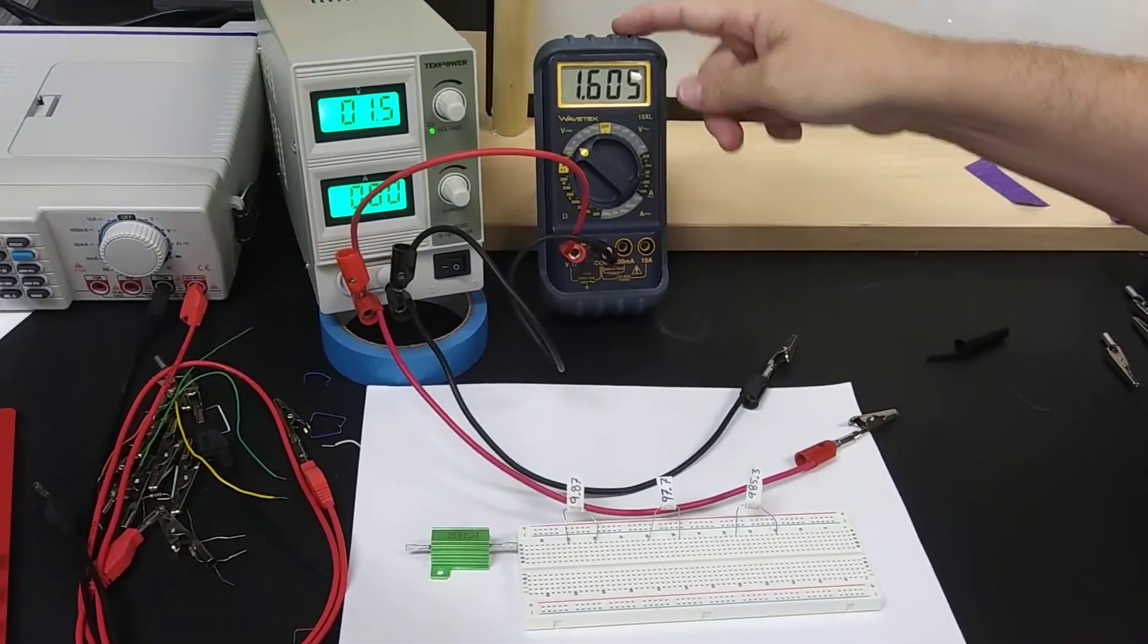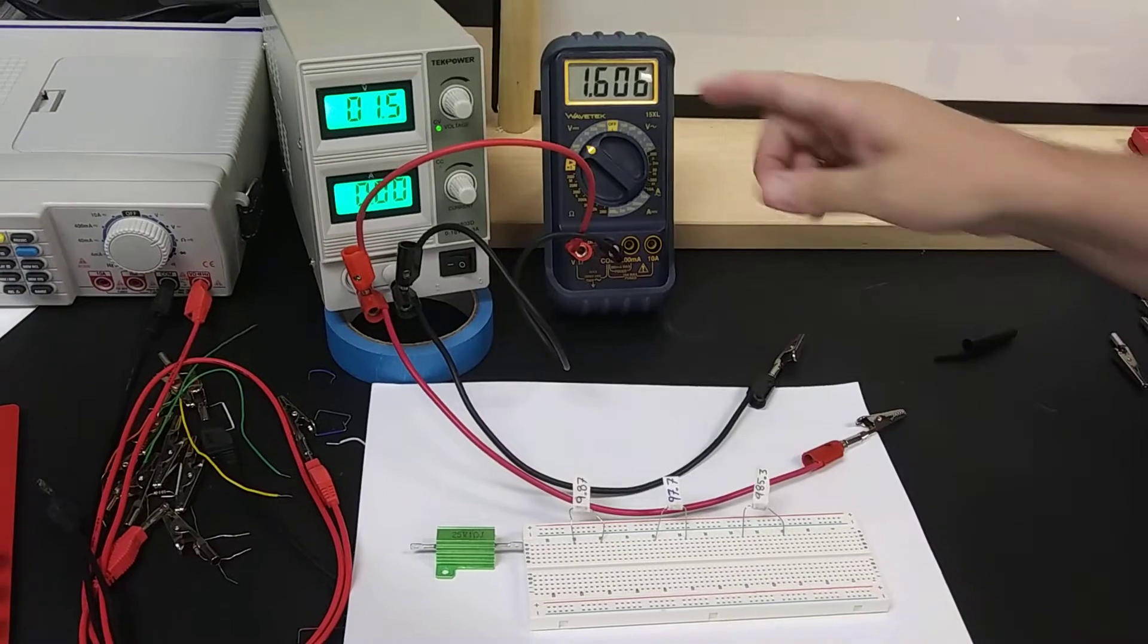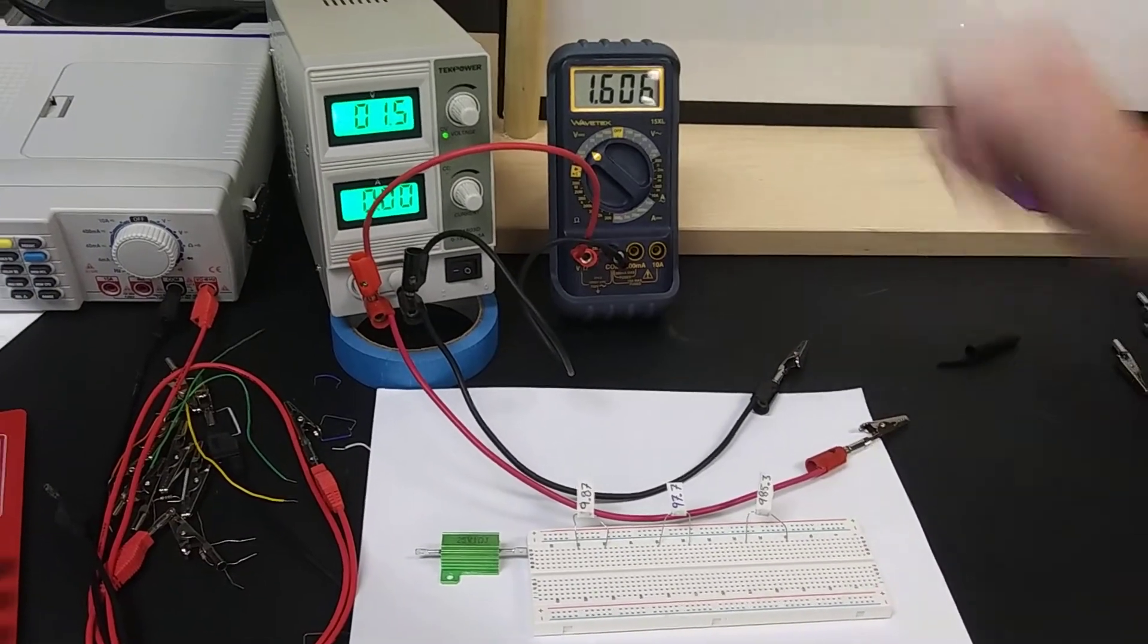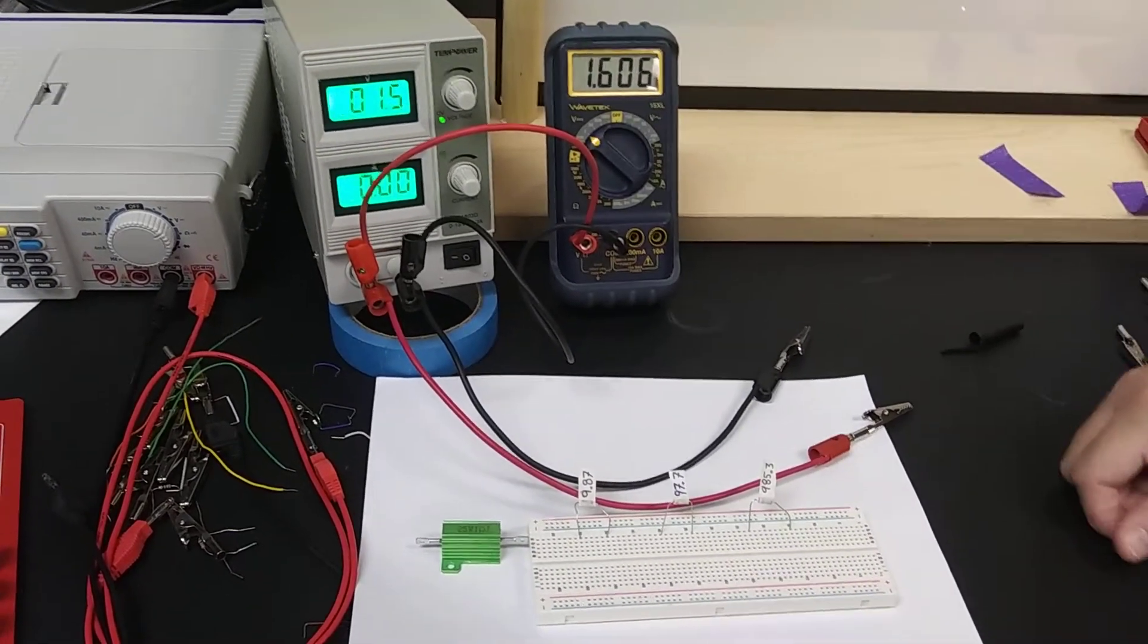Now this reads the voltage across there and we're getting about 1.6 volts, even though this dial says 1.5. That's fine.